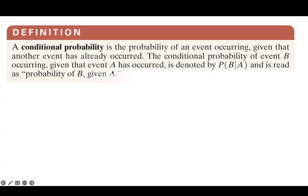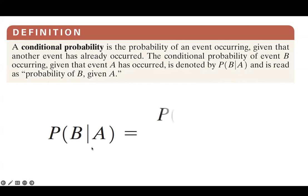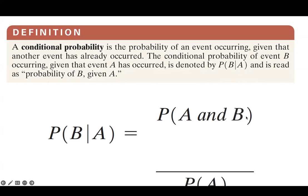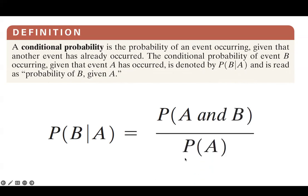The way you read it is: the probability of B given A is a fraction. On the numerator, you have the probability of the intersection between the two events, and on the denominator, you have the probability of the given event.